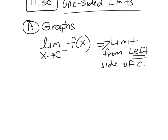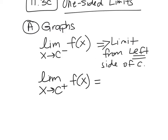We talked a little bit about coming from this side and coming from this side — they both go to the same spot — but not necessarily all the time. So now we also have the limit as x goes to c plus of f(x). This is the limit from the right side of c.